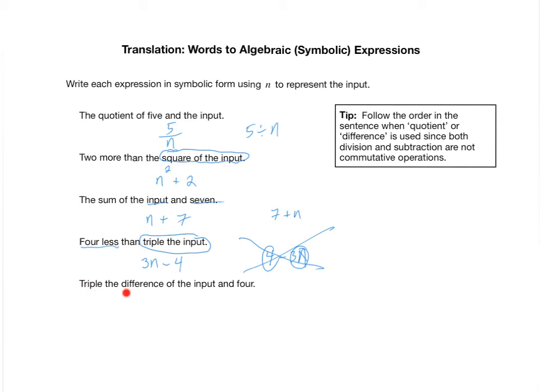And finally, how would you write triple the difference of the input and 4? Just like the previous one, let's first notice that there's multiple steps in this one. Where here, there was only one operation, division. Here, there was only one operation, addition. But here, we had squaring and addition. Here, we had multiplication and subtraction. And we've got a 2 part one here as well. So triple the difference of the input and 4.